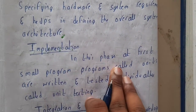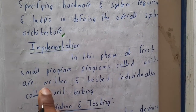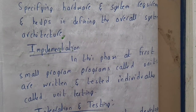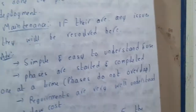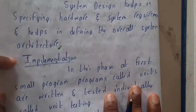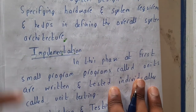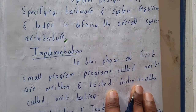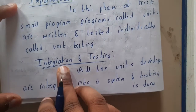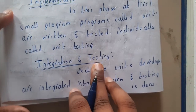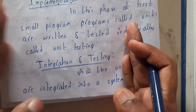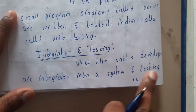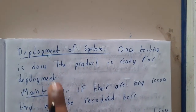In the implementation phase, the project is divided into small modules. Each module is written and tested individually — this is called unit testing. Once all modules are ready, they are integrated into one big system and tested together as per requirements — this is integration testing.